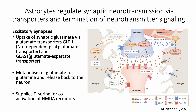Astrocytes are actually responsible for the majority of glutamate clearance in the synapse using these mechanisms. After uptake of glutamate, the astrocytes metabolize glutamate into glutamine and release this building block back to the neuron. In addition to glutamine release, astrocytes also release d-serine, which is a co-activator required for NMDA receptor activation.